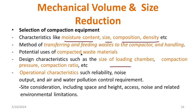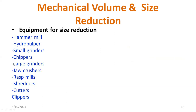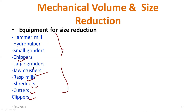These are the components of volume reduction — applying pressure and reducing the volume. For size reduction, we have a facility like shredding. If you want to cut or reduce the size, we use size reduction tools, which help with land reduction, material recovery, and reduction of moisture. Equipment used for size reduction includes hammer mill, hydro pulper, small grinders, chippers, large grinders, jaw pressure, rack mills, shredders, cutters, and clippers.